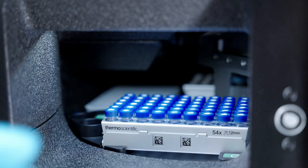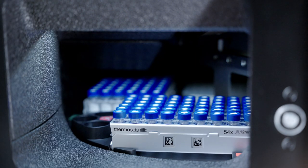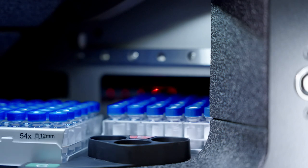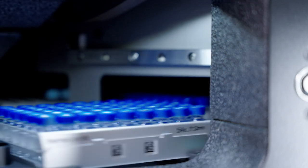An automated barcode reader manages inventory by keeping track of rack position, orientation, and sample type so you don't have to.